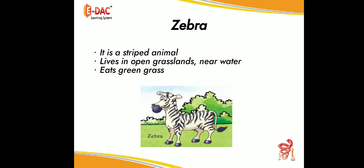Now let us see one more example. Children, look at the picture and tell the name of the animal. Yes, it is a zebra. It is a striped animal. It lives in open grassland near water, and it eats green grass.